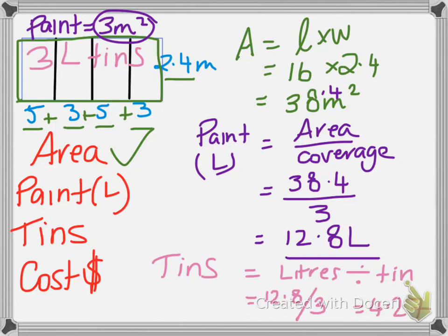Now, we can't buy 0.27 of a tin, so what we have to do is round it up and buy 5 tins.